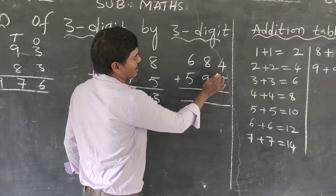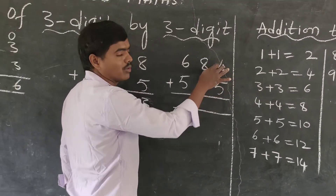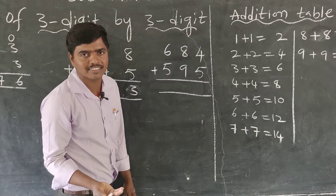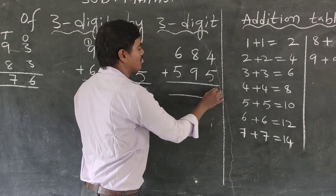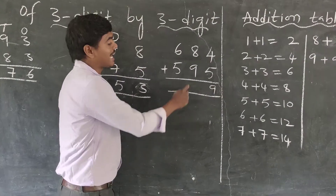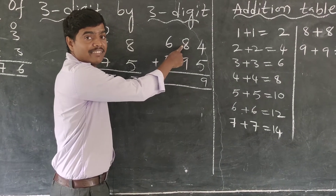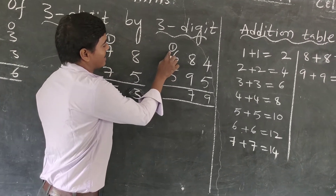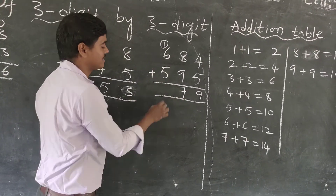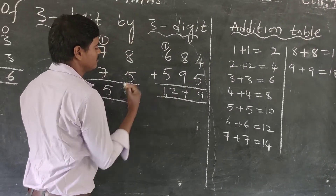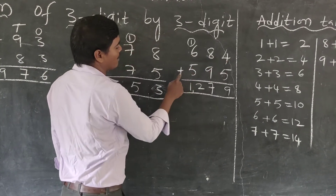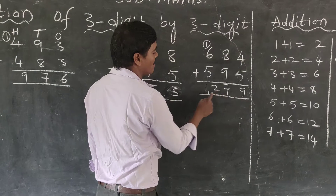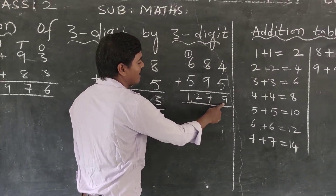Next example. 4+5=9, and 5+4=9 — both are the same. Then ones: 9+9=18. Write 8, carry 1. Hundreds: 1+5=6, 6+6=12. Write 2, carry 1. So 684 plus 595 is equal to 1,279.